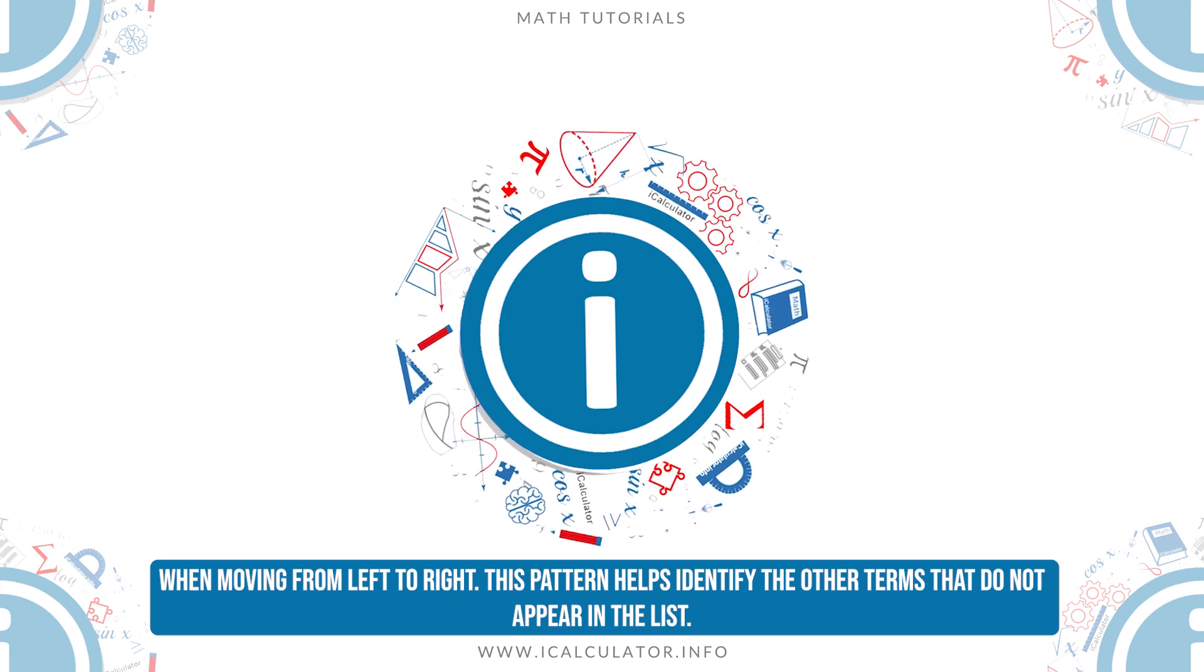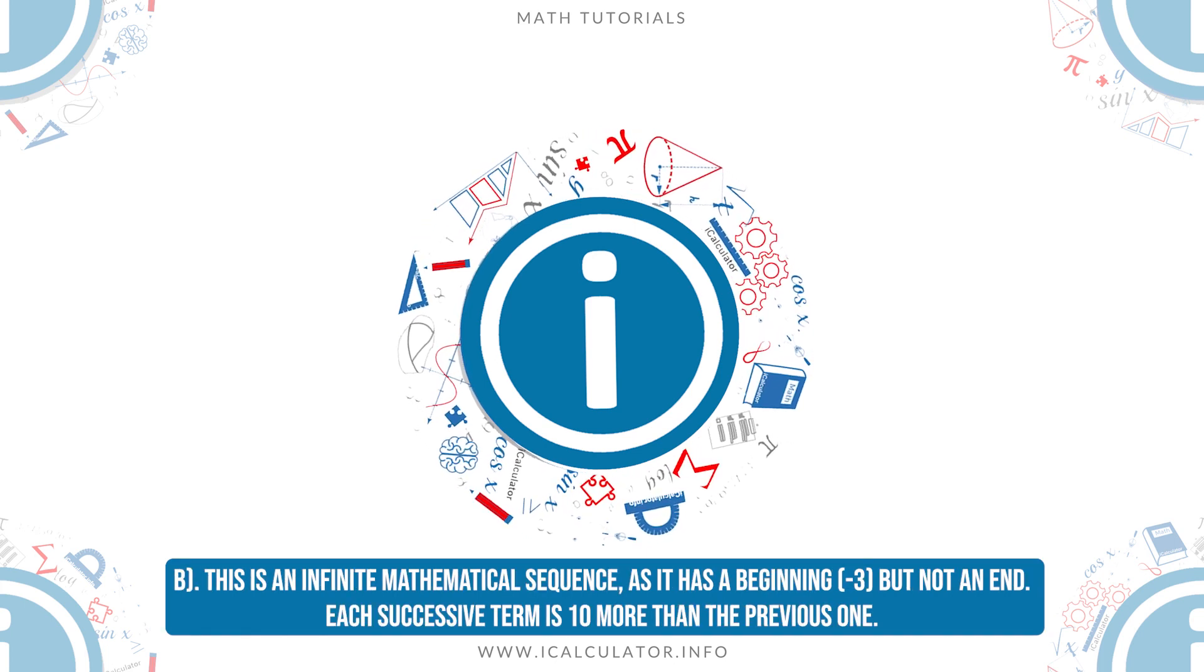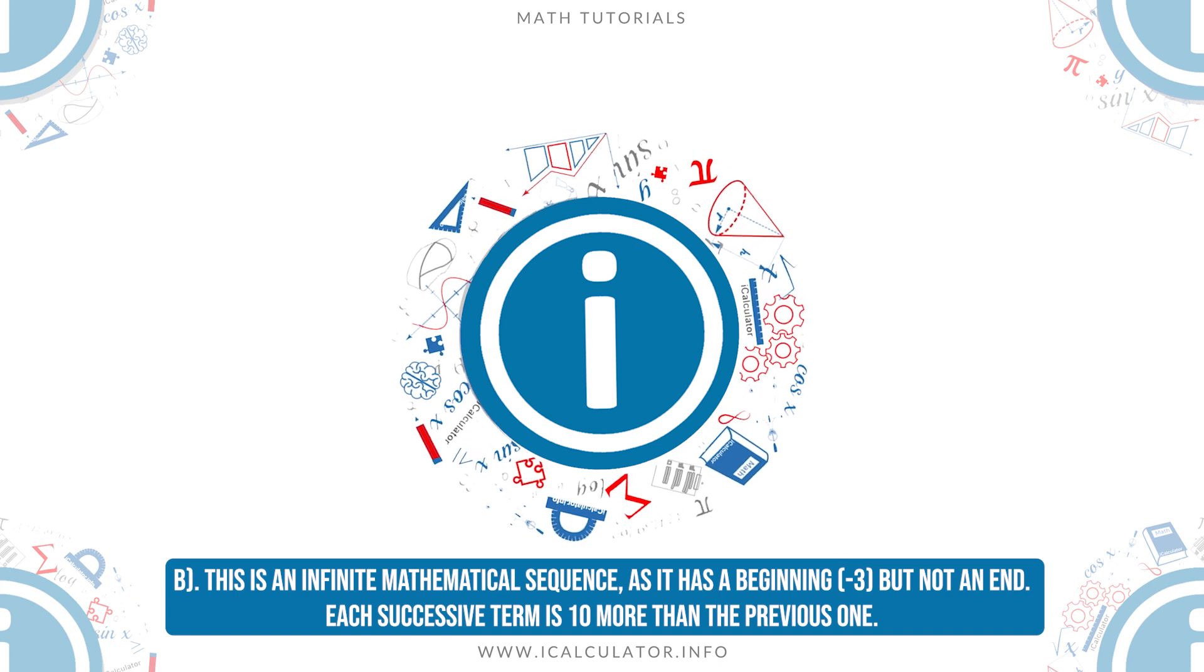This pattern helps identify the other terms that do not appear in the list. B: This is an infinite mathematical sequence, as it has a beginning, minus 3, but not an end. Each successive term is 10 more than the previous one.